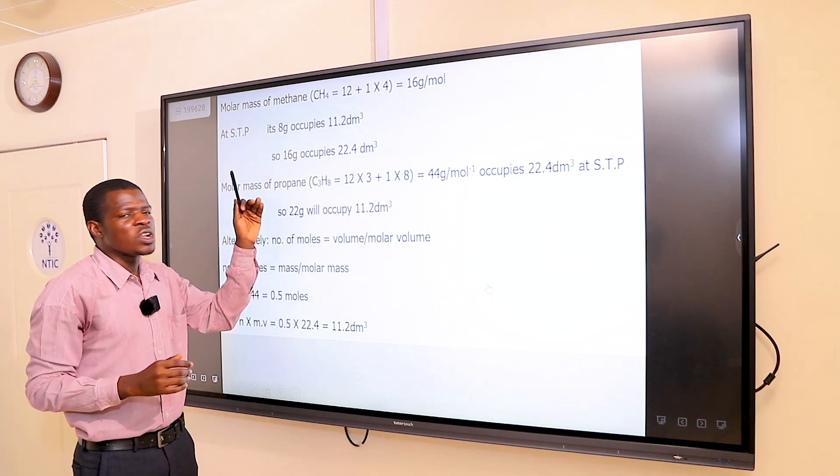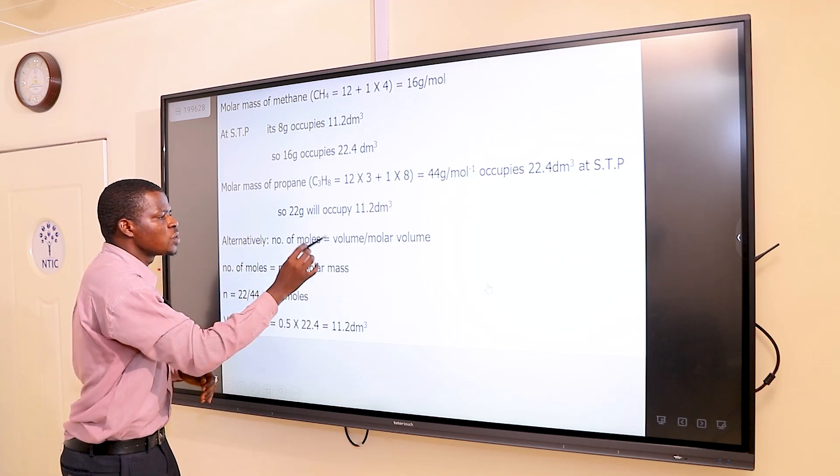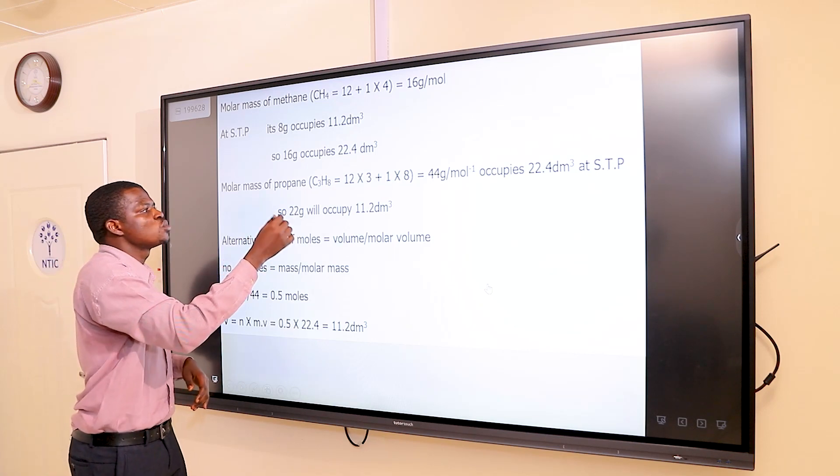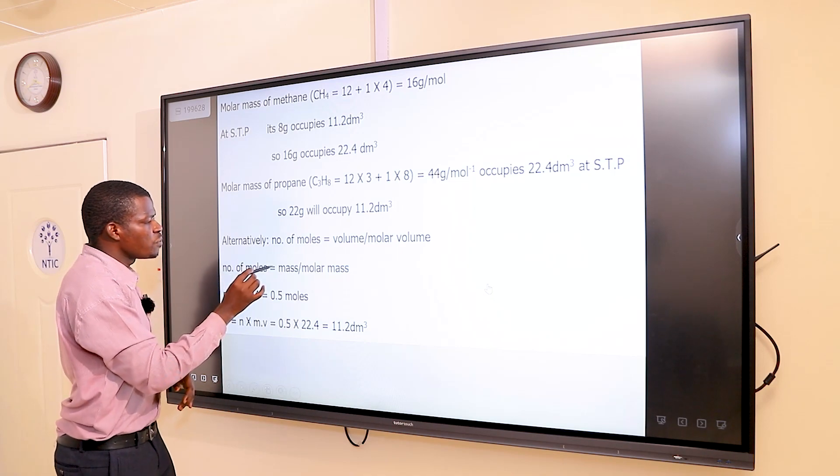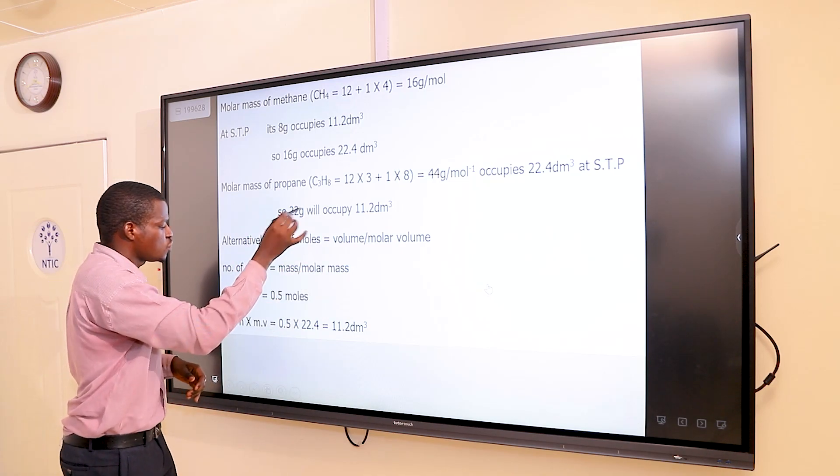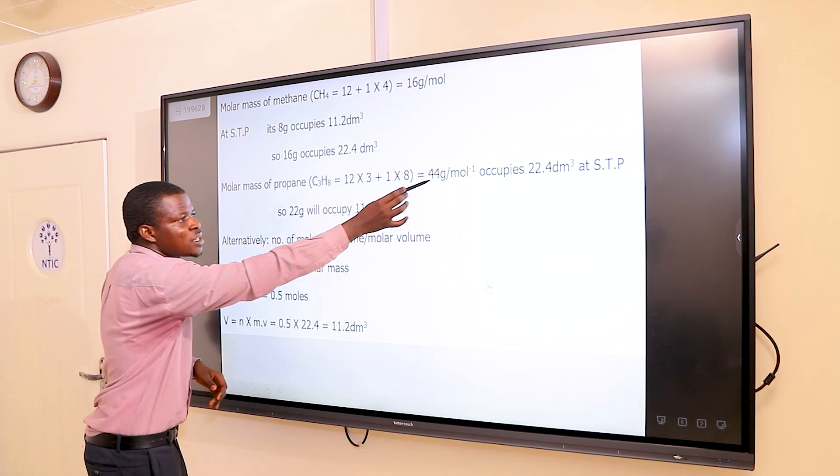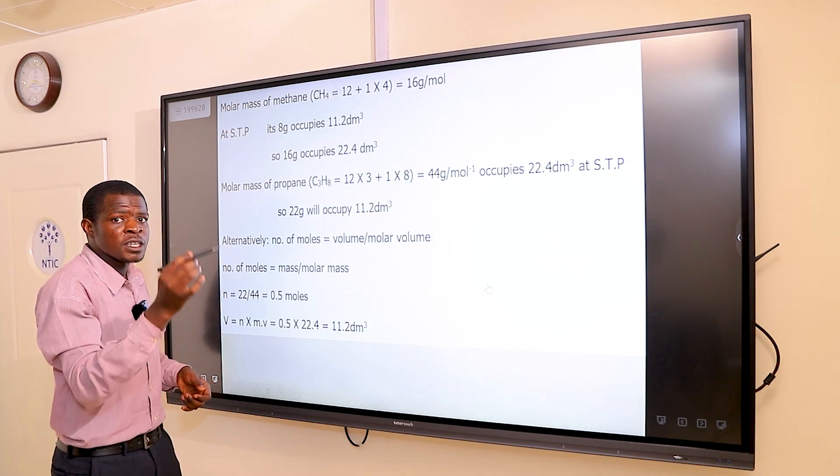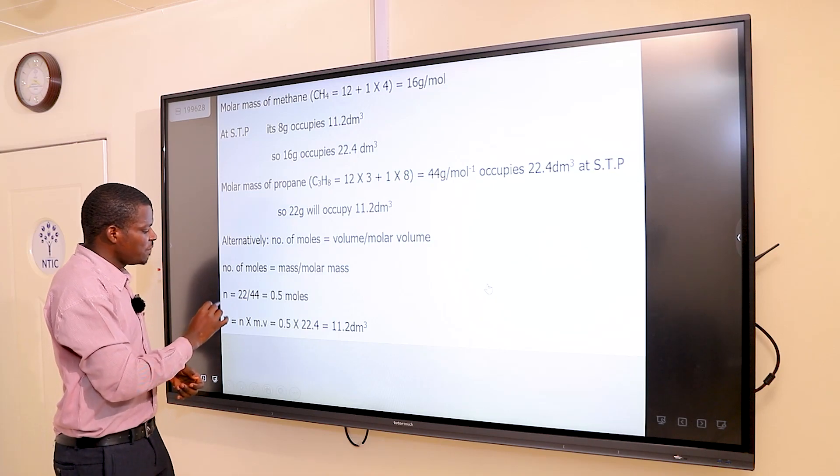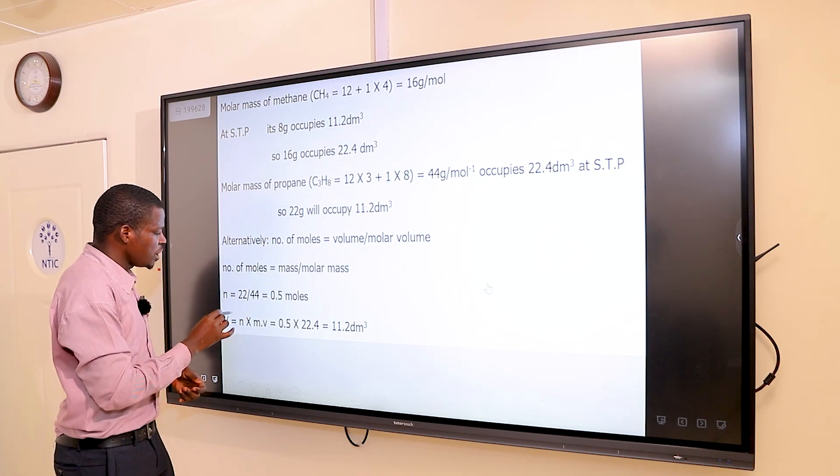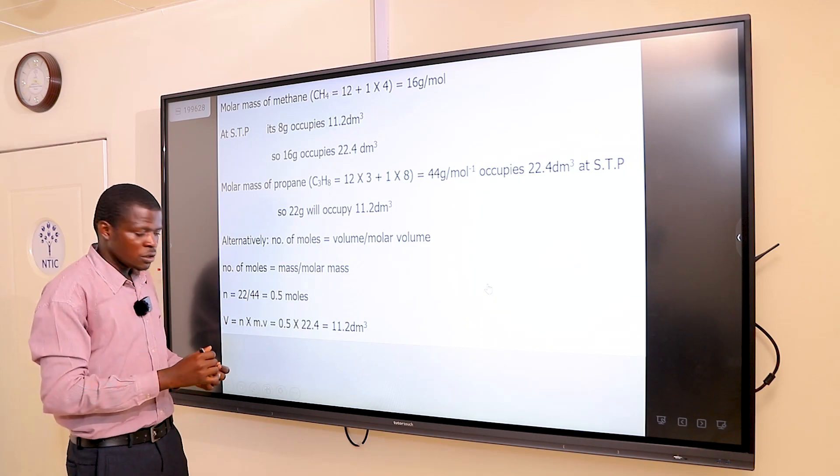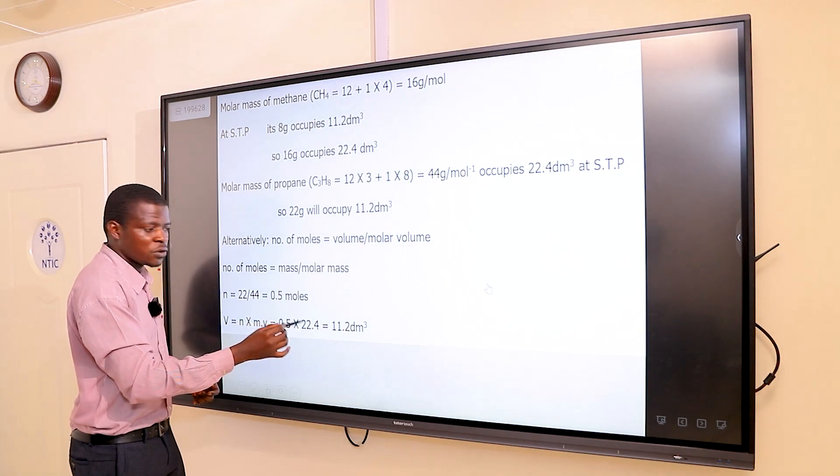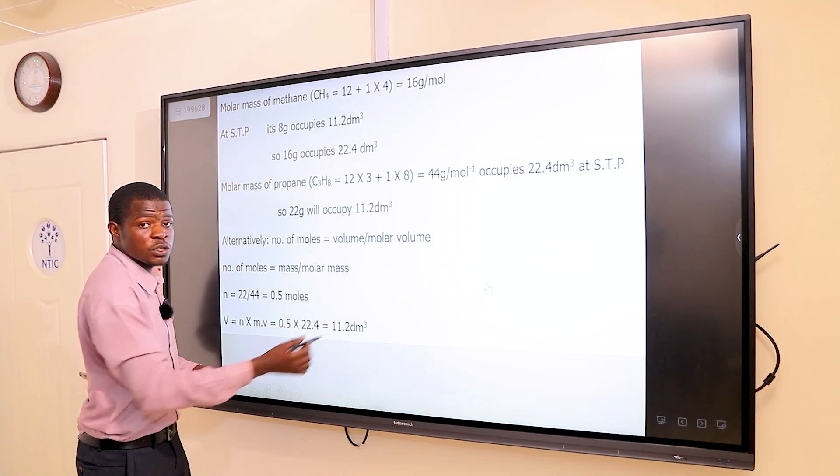Alternatively, to avoid all this long solving, you can do this: number of moles equals volume over molar volume. I want to find the number of moles in 22 grams of propane. Number of moles is mass over molar mass. The given mass was 22, so I have 22 over 44, which is 0.5. At standard temperature and pressure, the molar volume is 22.4. Making V the subject of the formula, V equals number of moles times molar volume. 0.5 times 22.4 gives you 11.2 dm³.